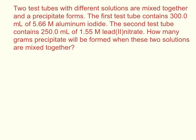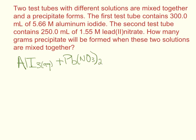The first thing you have to do is write out the balanced chemical equation. Our first chemical is aluminum iodide. For any compound in a double displacement reaction, the reactants have to be aqueous — don't forget that. The second test tube has lead(II) nitrate, and the nitrate has to have brackets around it because there are two of them, and that is also aqueous.